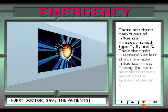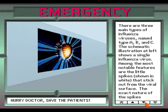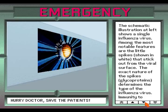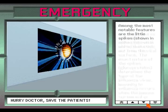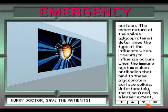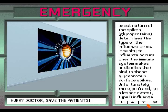There are three main types of influenza viruses named type A, B, and C. The schematic illustration at left shows a single influenza virus. Among the most notable features are the little spikes, shown in white, that stick out from the viral surface. The exact nature of the spikes — glycoproteins — determines the type of the influenza virus.